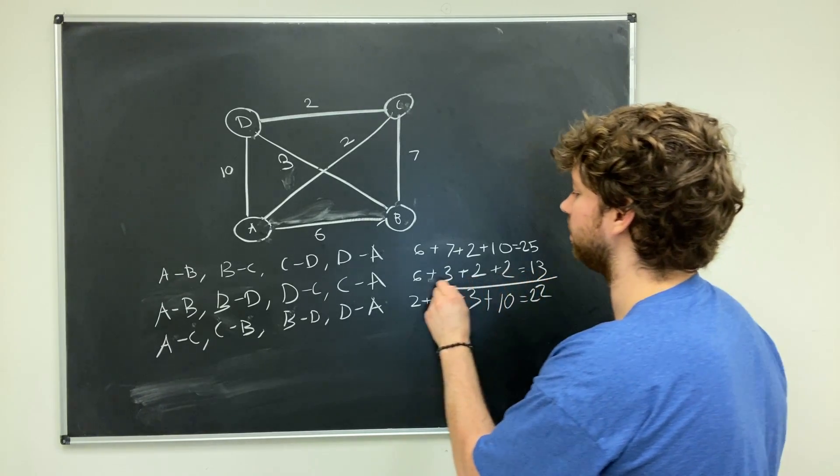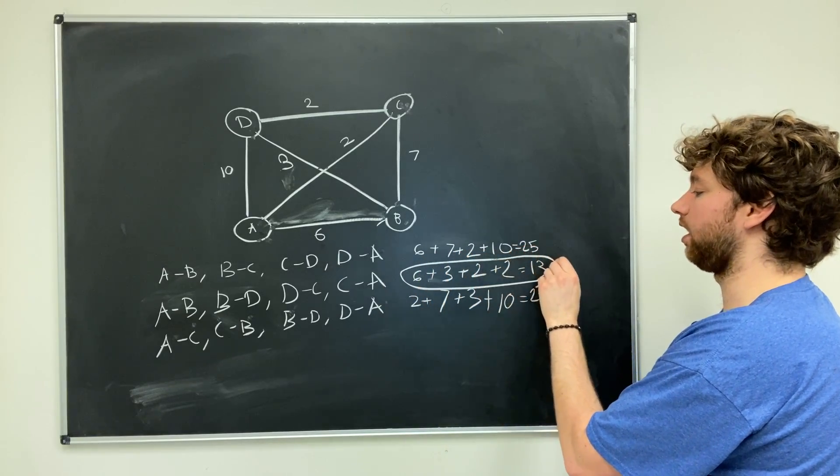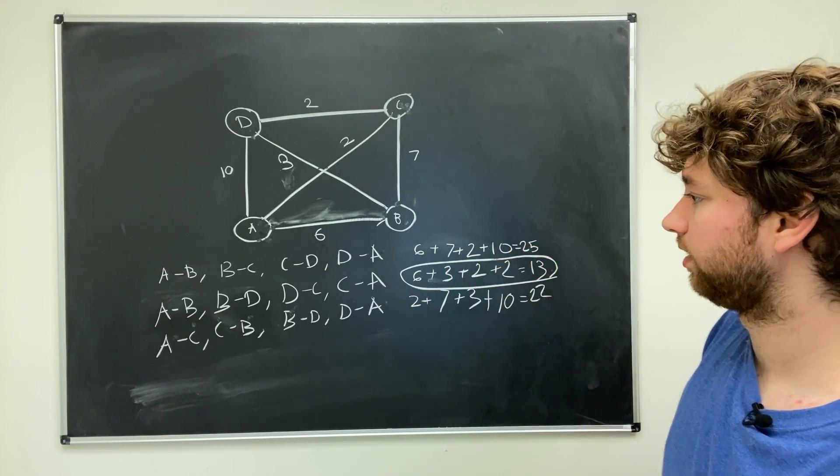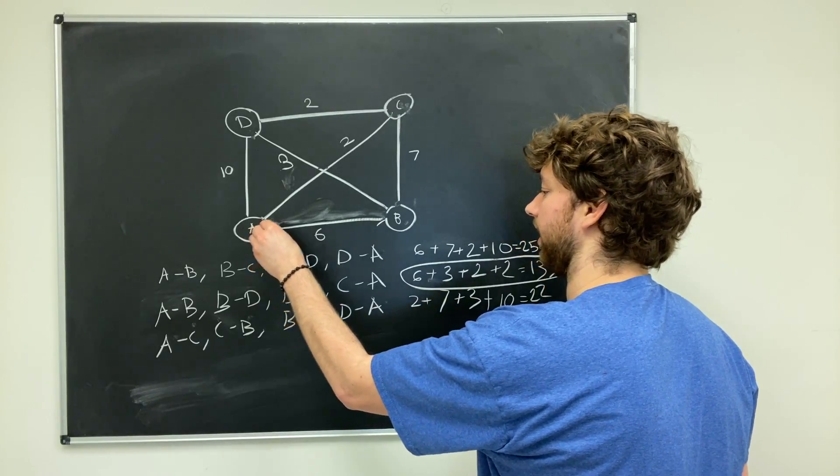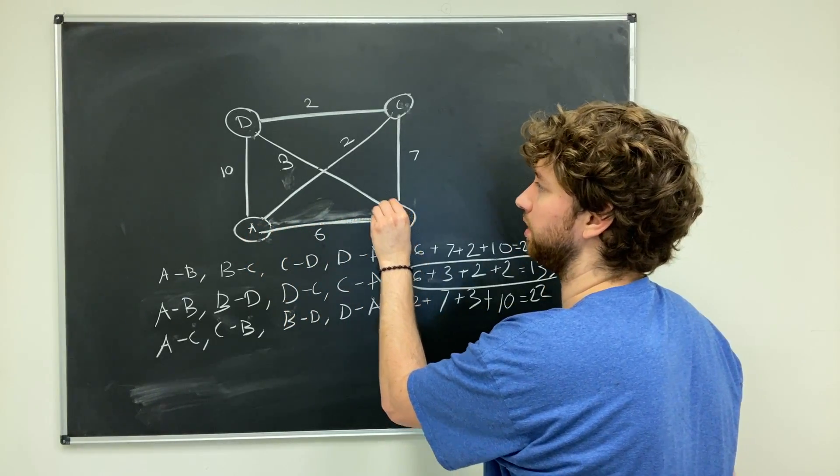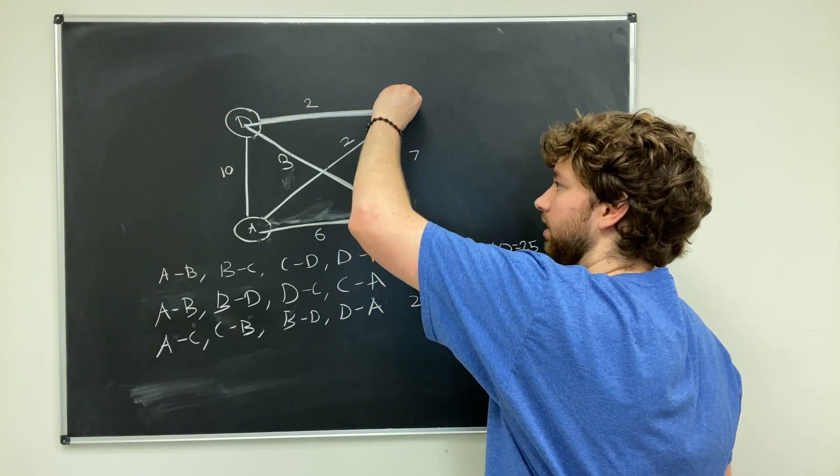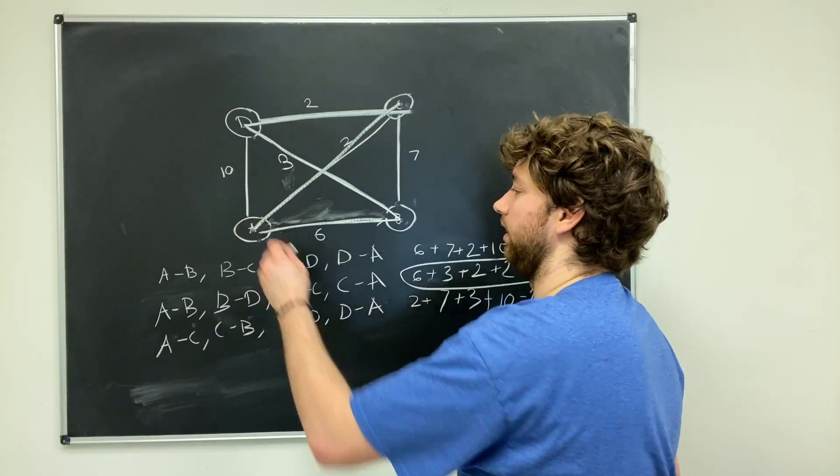So then we know that for the salesman to optimize his trip, he should take this path. So we should go A to B, B to D, D to C, and then C to A. And he stopped where he